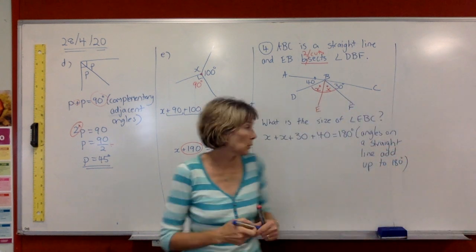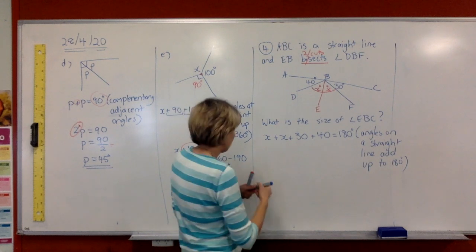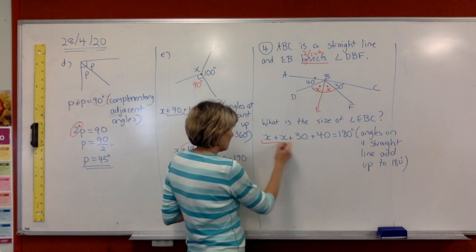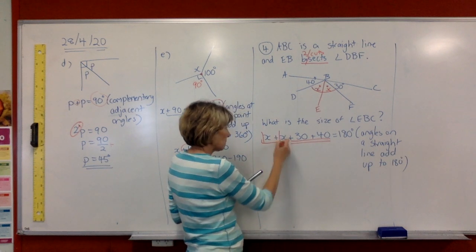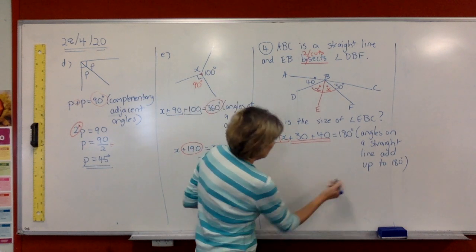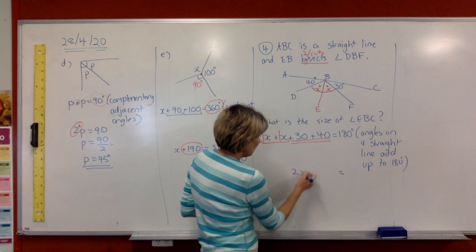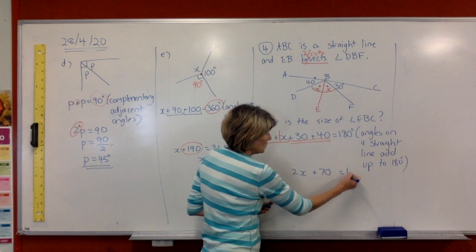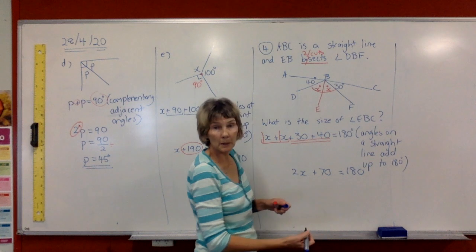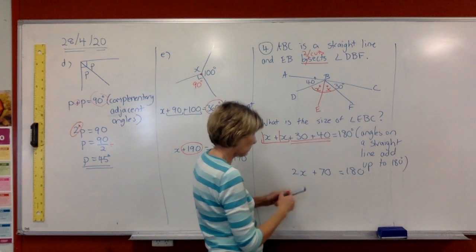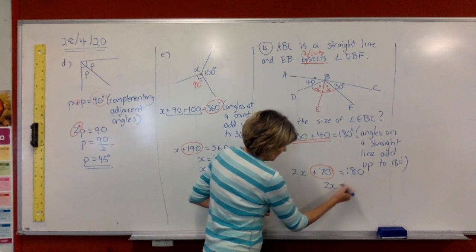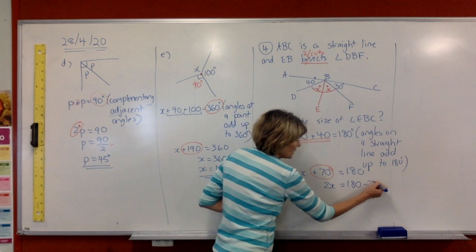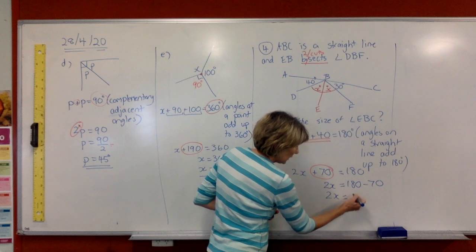Okay, so we're just going to solve this equation now and find out what this X is. So we're going to collect our like terms here and here. Don't forget this is 1X plus 1X. So we have 2X plus 70 equals 180. So we just keep going with the solve of our equation as we normally do. Get rid of the plus 70. Minus the 70 on the other side and work that out on your calculator.